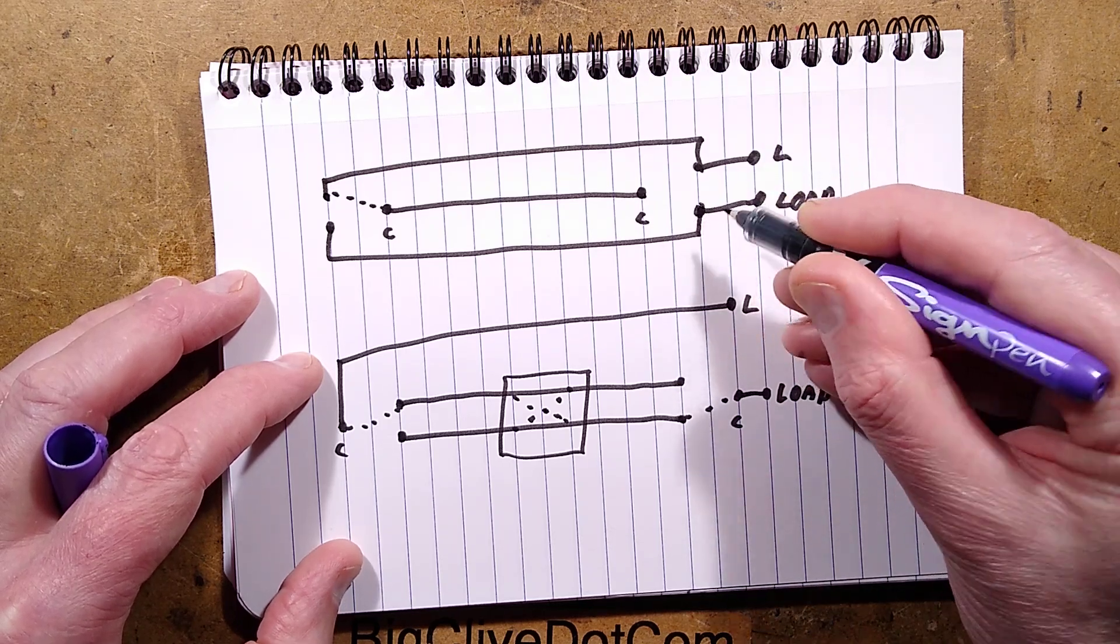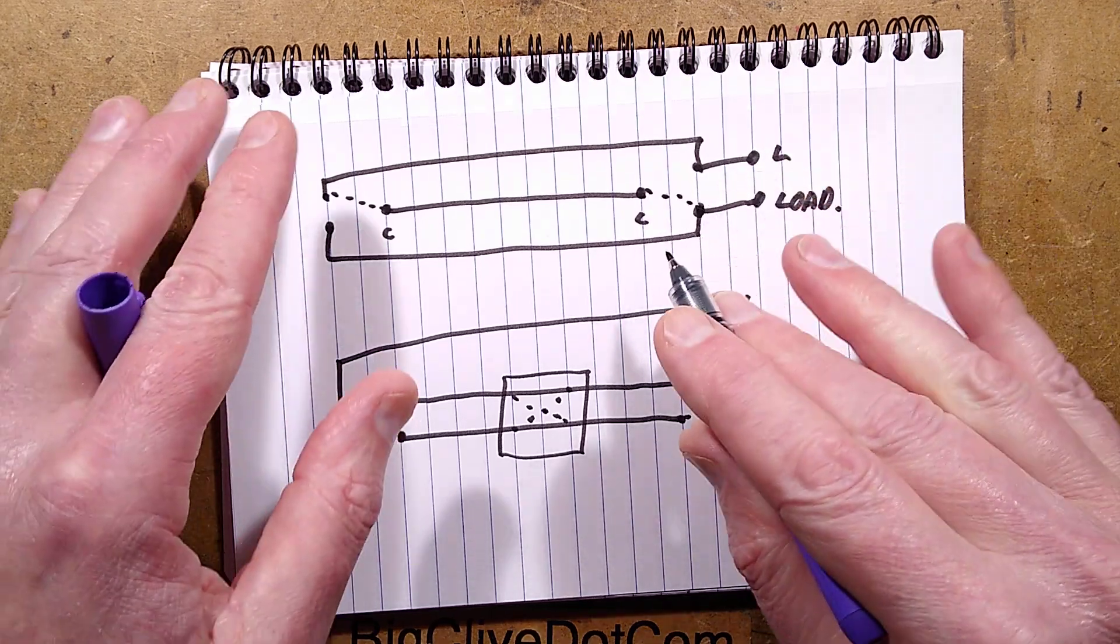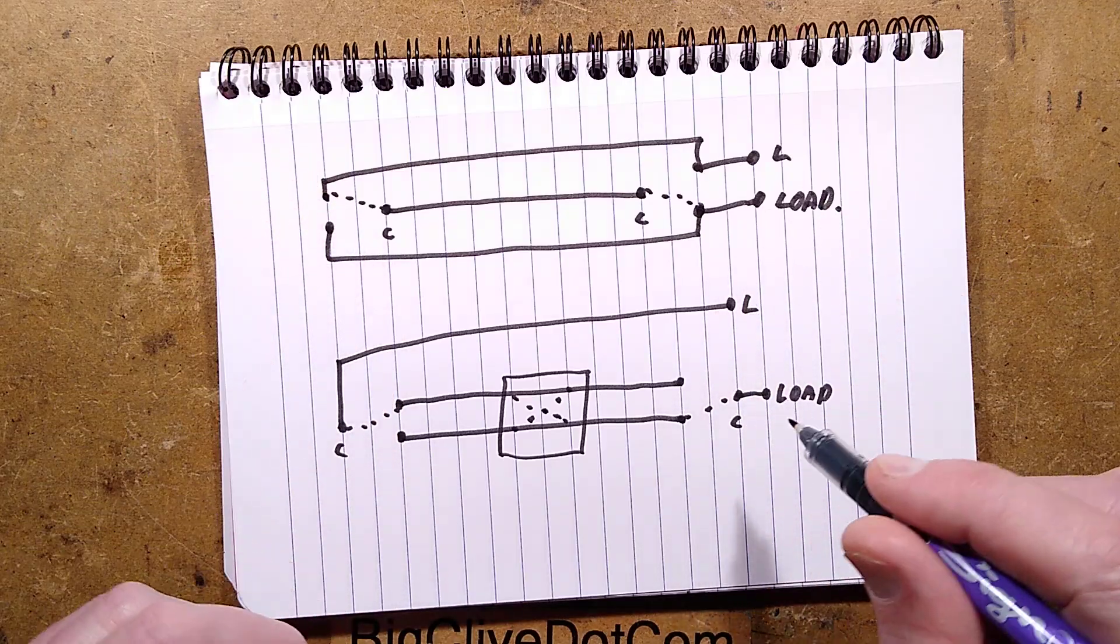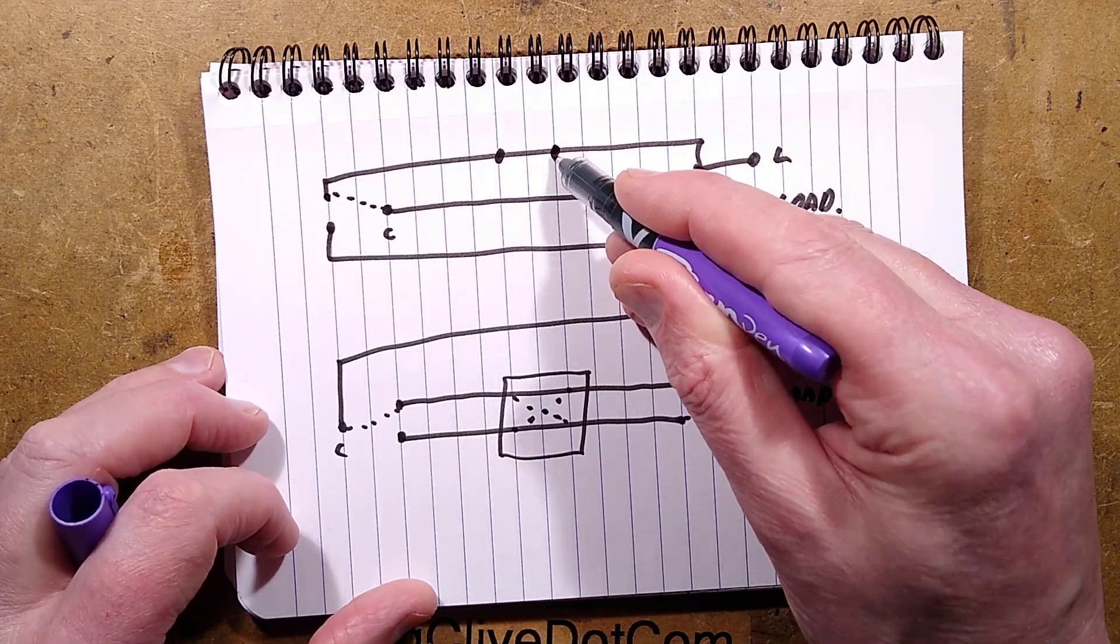If you doubt me, draw it out in all the possible permutations and you'll see that the same thing works again. The strapper can be broken by an intermediate switch.